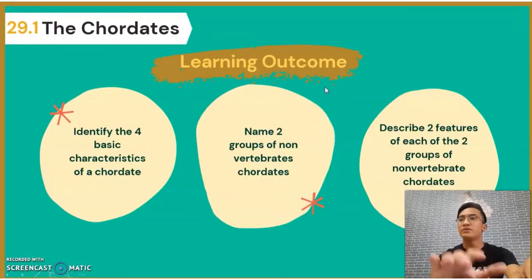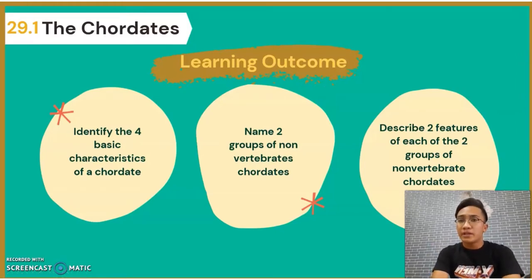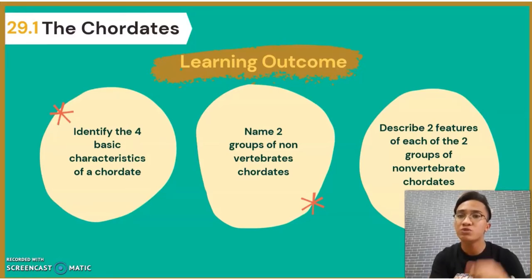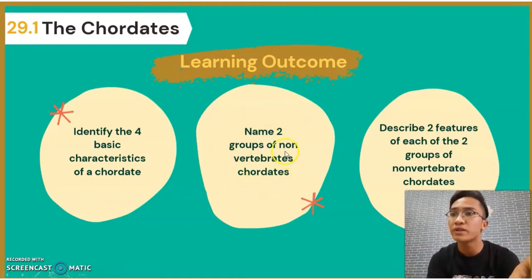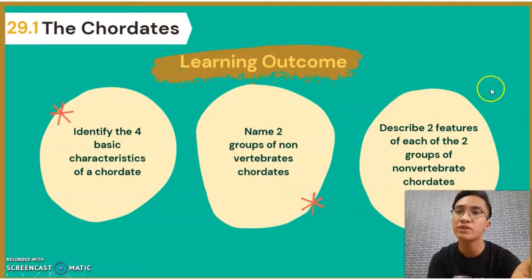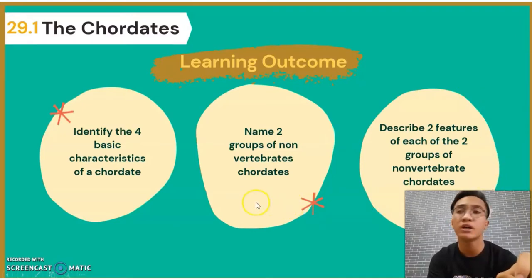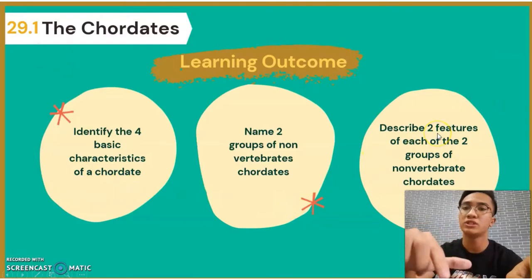Here are the learning outcomes. At the end of the video, you must be able to identify the four basic characteristics of the chordates. You must also be able to name two groups of non-vertebrate chordates and describe two features of each of those two groups.